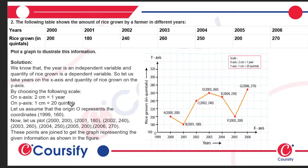On the Y-axis, the starting point — the origin — is (1999, 160). The starting point of the X-axis is 1999, and the starting point of the Y-axis is 160.